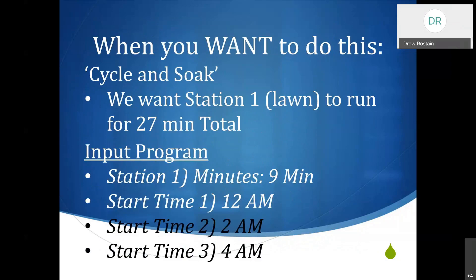The case where you might actually want multiple start times is cycle and soak. For instance, if we've determined we want to water our lawn for 27 minutes total to get really deep watering, but running 27 minutes all at once might result in most of it ending up in the street. So at the actual program, we input only 9 minutes for Station 1. Then we break up the start times to 12 AM, 2 AM, and 4 AM. So now you're seeing 9 minutes at 12, 9 minutes at 2 AM, and 9 minutes at 4 — we've got our 27 minutes total and we've reduced our runoff.